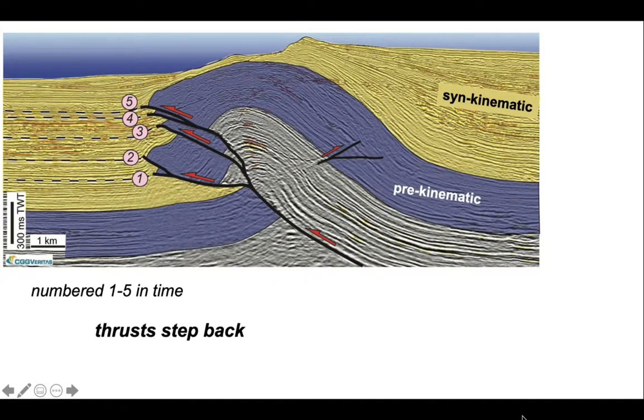It looks like the sedimentation is strongly controlling the trajectory taken by the thrust as it tries to break out of the forelimb of this fold.